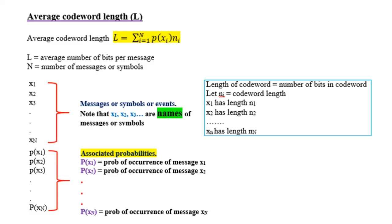The average codeword length of any source is given by this formula: L = Σ P(Xi) × Ni, where Ni is the length of the codeword. X1 has length N1, X2 has length N2, and so on. X1, X2, X3 are messages or symbols with probability statistics. L is the average number of bits per message, and N is the total number of messages or symbols.